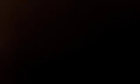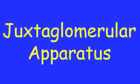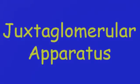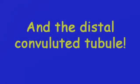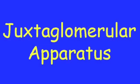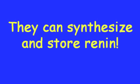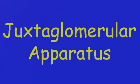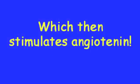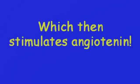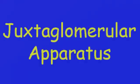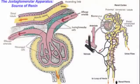Then you're the afferent arteriole — juxtaglomerular apparatus — and the distal convoluted tubule — juxtaglomerular apparatus. They can synthesize and then store renin, juxtaglomerular apparatus, which then stimulates angiotensin, juxtaglomerular apparatus.